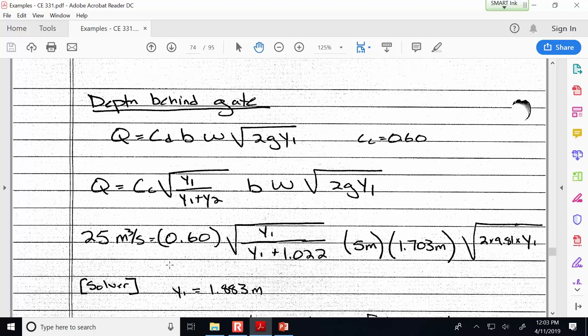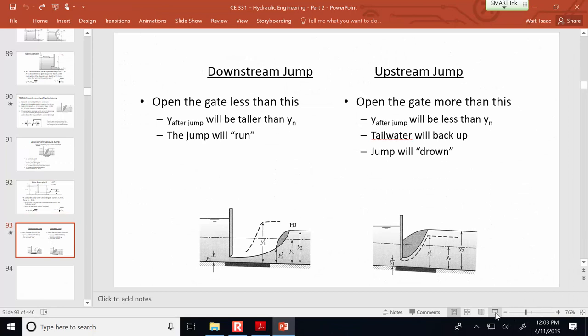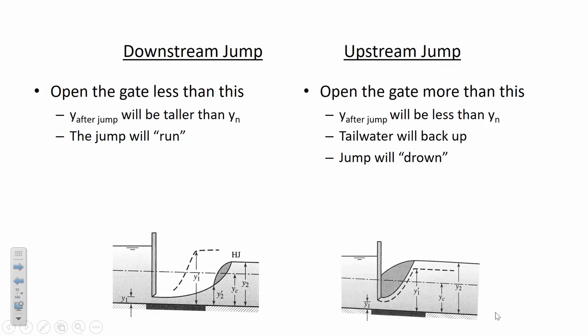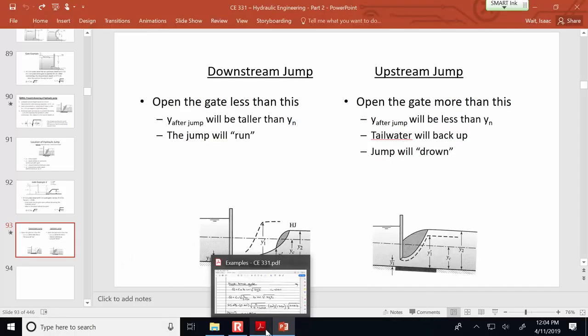It looks like we did save enough time to go down to the lab and observe the hydraulic jump. In the lab, we're going to see if we can make the jump run away from the gate by changing how wide open the gate is and also the slope of the channel. Then we'll make the jump drown by reducing the slope and opening the gate a bit more. Let's meet down in the hydraulics lab.